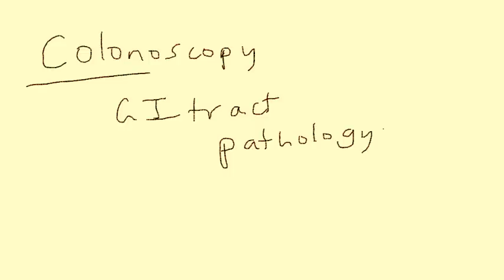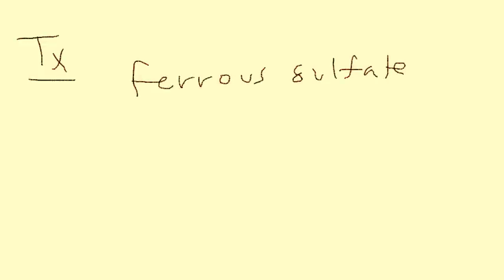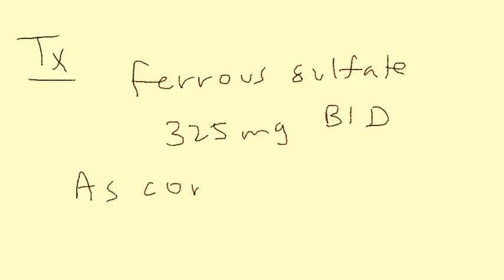Finally, the treatment: obviously you have to give the person iron — replacement. The prescription is ferrous sulfate, most commonly 325 milligrams twice a day. Interestingly, ascorbic acid — either as a pill or in the form of orange juice — can help enhance iron absorption, which can be very beneficial.